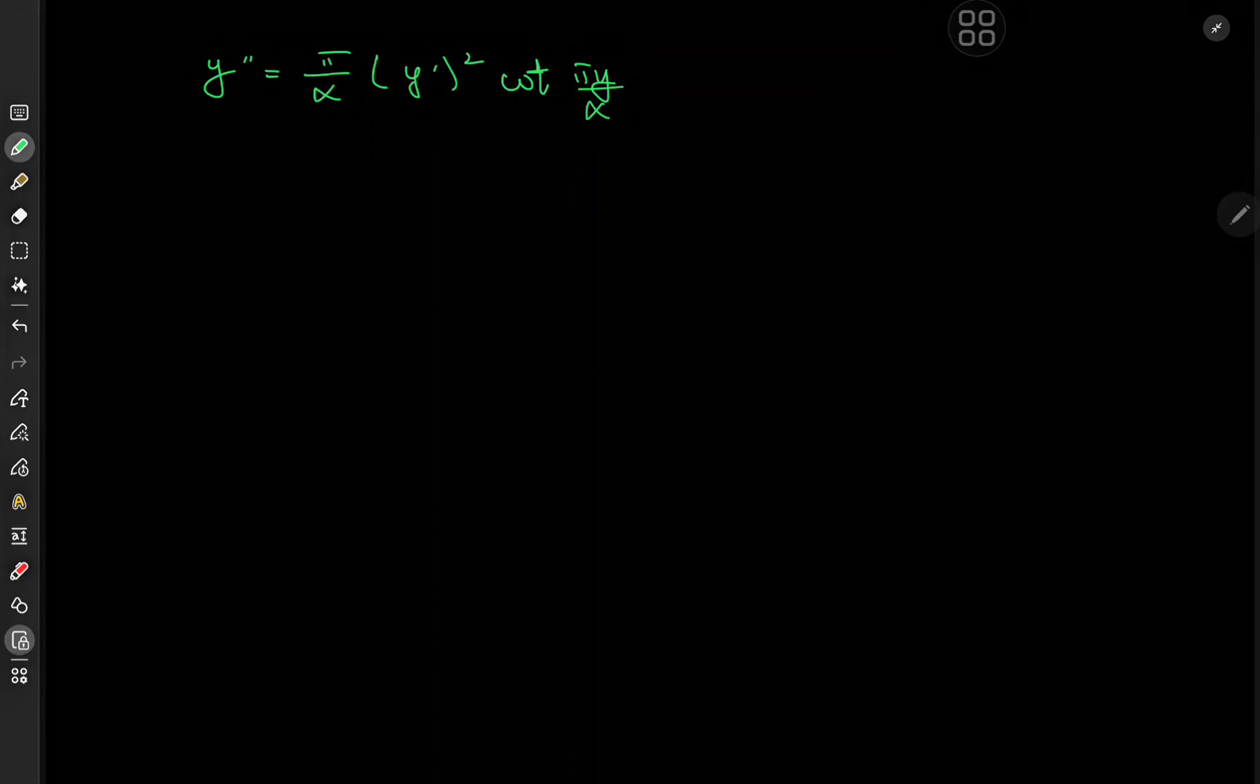Now you must be thinking, why is there specifically a pi over alpha term? Well, you can ignore it and you can still solve the differential equation. I'll just have to carry forward an annoying constant term, so the choice is purely convenience.